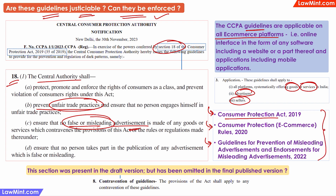Now, what happens in case of contravention of these guidelines? The draft version was more clear on this, since it had Section 8, which said that the provisions of the Consumer Protection Act would apply in case of contravention. But for some reason, Section 8 has been dropped from the final version published in the Gazette. In any case, since these guidelines have been published by the CCPA under the Consumer Protection Act, it is logical to understand that any contraventions will be dealt with in the same way as how unfair trade practices or false or misleading advertisements are dealt with.